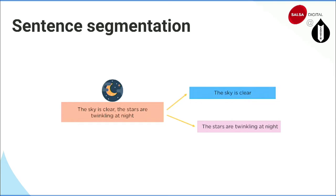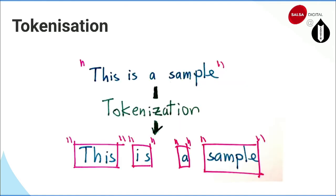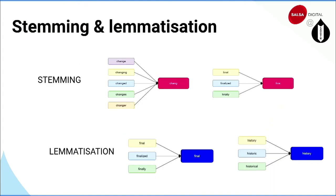The first subtask is segmentation — it takes the whole text and divides it into simple sentences so further steps can be performed. The next step is tokenization — every word is a token. For example, 'this is a sample' — each word becomes a token, and even a period at the end could be a token.